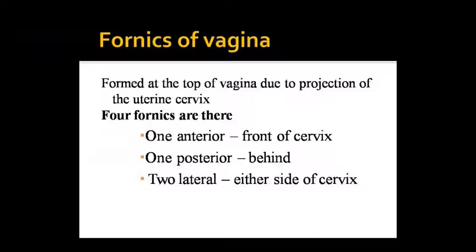These are structures we introduced in the introductory class — external genital structures and internal genital structures. Now we are reading them in detail: their parts and their structure. Remember to write these down because if there is a short note question, you need to be able to write all the things we have covered in class. You cannot leave out any of the answers.